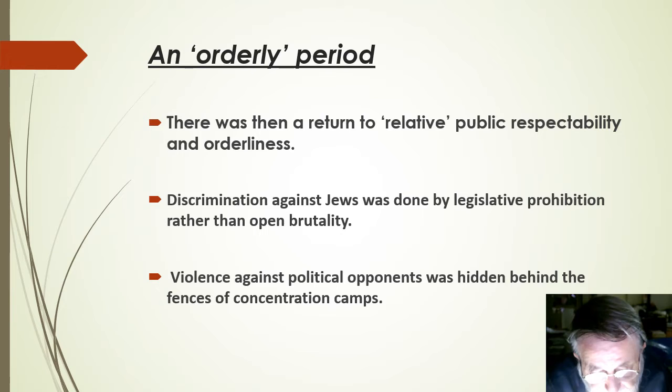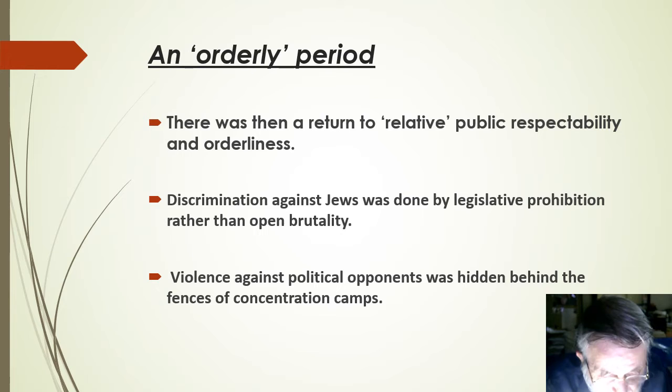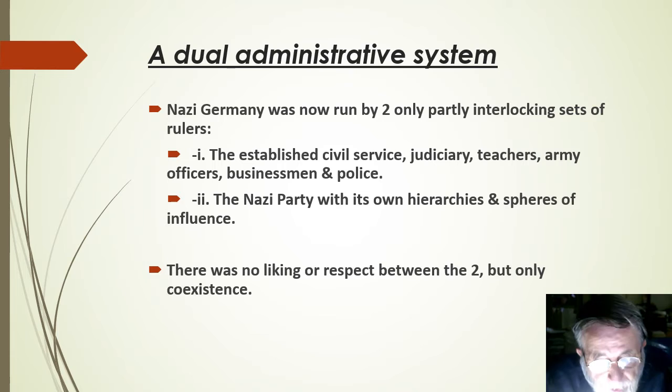From 1934 until 1938 there was a period of relative normalization and respectability. Order seemed to have returned. Although there was discrimination against Jews, it was done by legislative prohibition rather than open brutality. Violence against political opponents was hidden behind the fences of the newly established concentration camps.